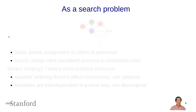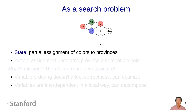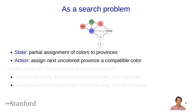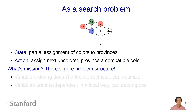This is a perfectly fine way of solving the problem and shows how powerful state-based models can be. To recap: the state is a partial assignment of colors to provinces, and from each state an action assigns the next uncolored province a compatible color. So what's missing? Why are we talking about this when we already know how to solve it with a state-based model? Well, the question is: can we do better? And the answer is yes, because there is more problem structure.